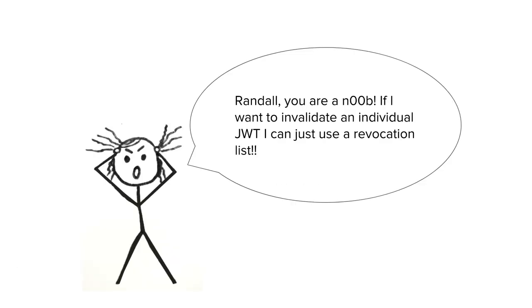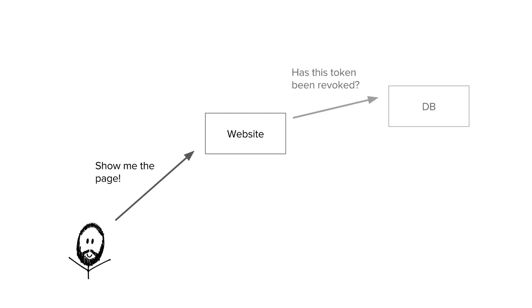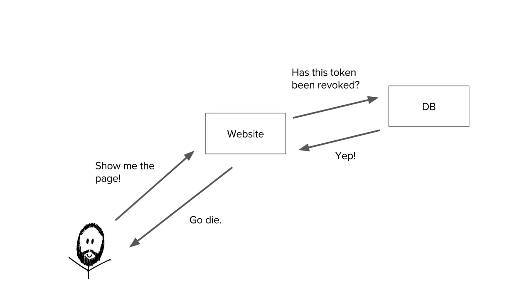You might think you could use individual revocation lists instead. Let's say a user logs in and makes a request — the website grabs the JWT, queries a DB to ask if this token has been revoked, and the database says yes, so the website denies access. The problem: while this does work, we've reintroduced the database — meaning we have latency. And remember JWTs are larger in size and less efficient than session IDs. So not only are we wasting bandwidth, we're also wasting latency talking to the database. We've solved the problem but at a net loss to efficiency.